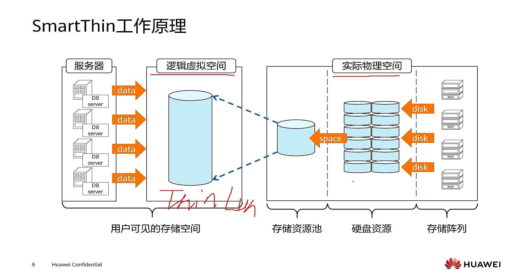SmartThin presents to users a capacity that is larger than the physical storage space. For example, the physical machine might have only 5 TB of space. If we use ThinLun and create an 8 TB LUN, it is presented to the user's server. However, the actual physical space of the machine may only be 5 TB. So for the user, they see 8 TB allocated to them — but are they really using that much all the time?